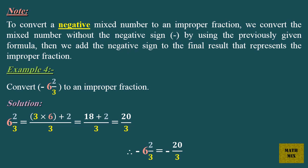The denominator equals 3. 6 and 2 thirds equals 3 times 6, plus 2, over 3, which equals 18 plus 2, over 3, which equals 20 over 3. Therefore, negative 6 and 2 thirds equals negative 20 over 3.